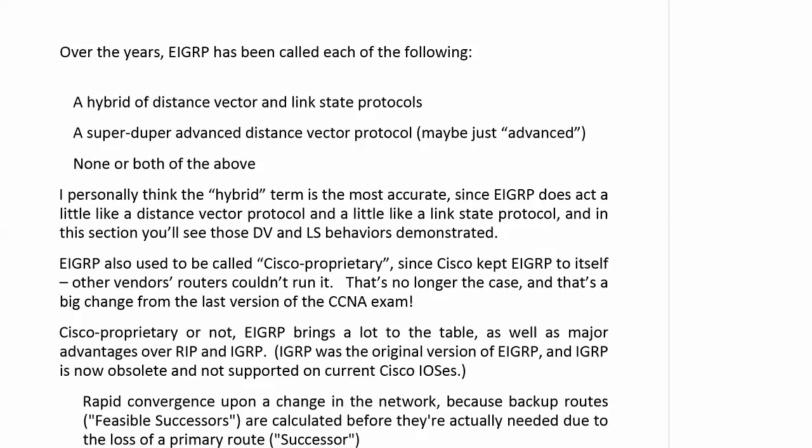We have a lot of features to discuss, and you'll see them all live on the rack as well. EIGRP has been called a lot of things. One is that it's been referred to as a hybrid protocol — a hybrid of distance vector and link state protocols. Some people just call it an advanced distance vector protocol. Personally, I think hybrid is accurate because it has a little bit of distance vector behavior and a little bit of link state behavior, and in this section you'll see both of those behavior types demonstrated.